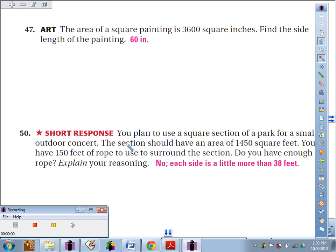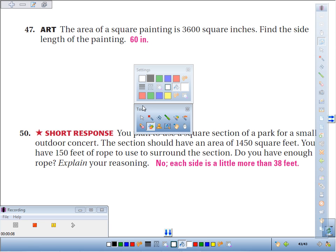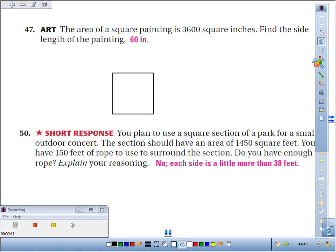Learning Target 276 asks us to apply square roots in a real-world situation. The area of a square painting is 3,600 square inches. So here I've got this square painting, and it's 3,600 square inches.